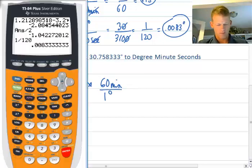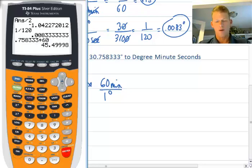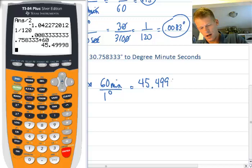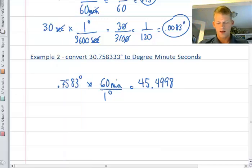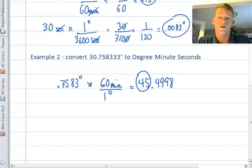We do .758333 times 60, and that's our first conversion. This equals 45.4998. I'll put the calculator away. The number of whole minutes is 45. I hope you notice that we're converting back to what we just had. This is just to show you that it's actually working.